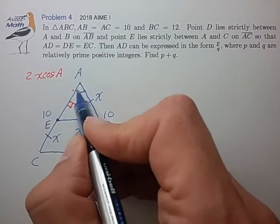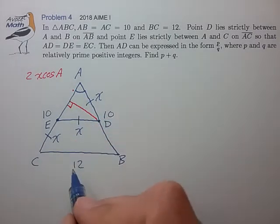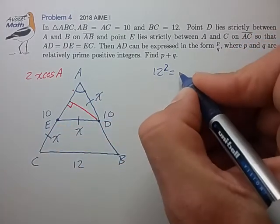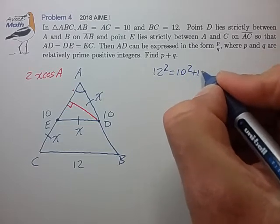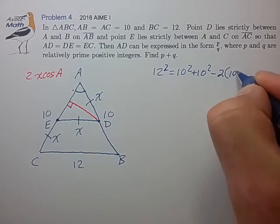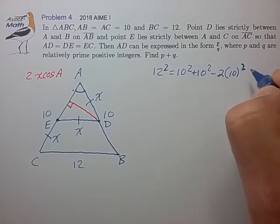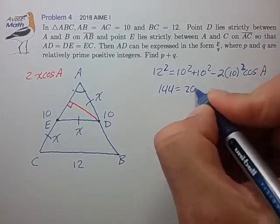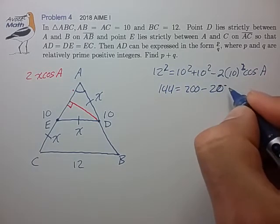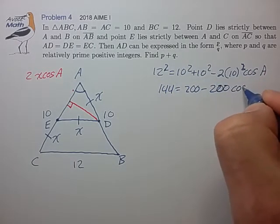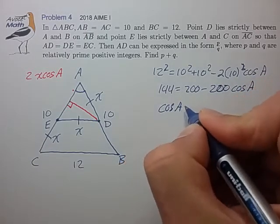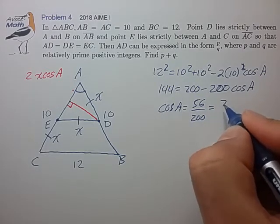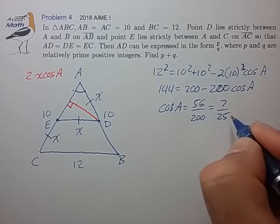Let's find the cosine of A using the law of cosines: 12 squared equals 10 squared plus 10 squared minus 2 times 10 times 10 times cosine of A. Reducing that, we find that cosine of A is 56 over 200, which reduces to 7 over 25.